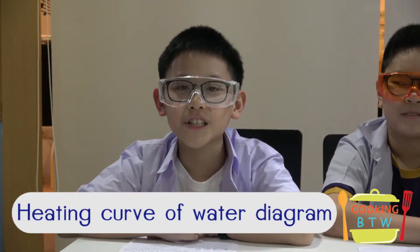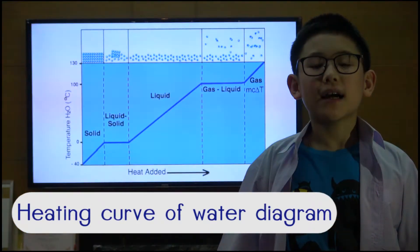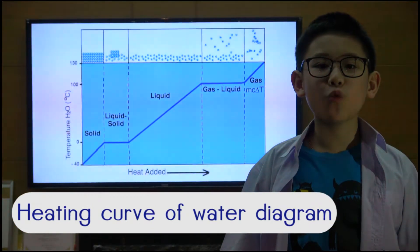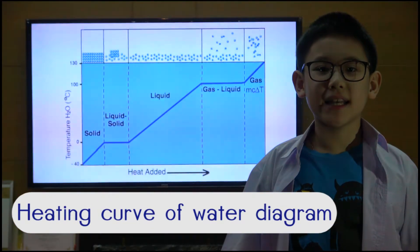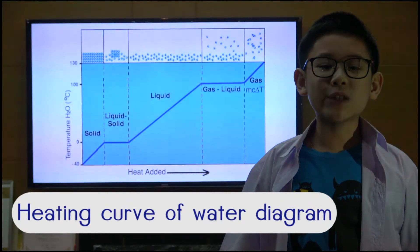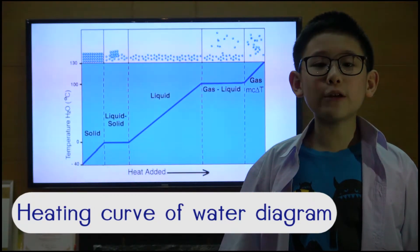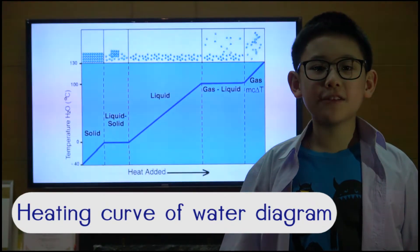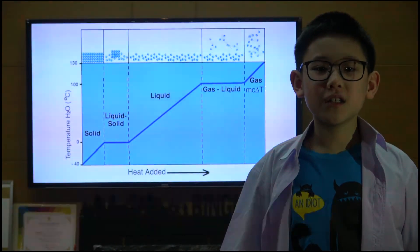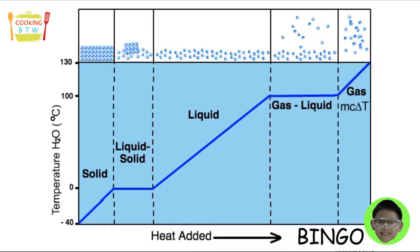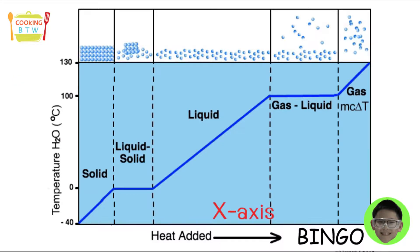Now I'm going to explain the heat curve of water diagram. This diagram shows what happens to water when heat is steadily supplied, starting with ice, and shows the melting, boiling, and freezing points of water. The y-axis represents temperature in Celsius and the x-axis represents heat added.